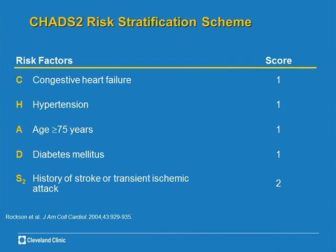Hypertension: we used to think it was systolic blood pressure above 160, but now we adopt the usual definition, which is above 140 systolic or above 90 diastolic. Age: as we get older, the risk of stroke goes higher, especially once we hit 65 to 75 years of age. And then diabetes mellitus — whether type 1 or type 2, it is unfortunately a risk for stroke.